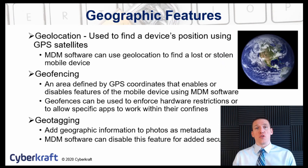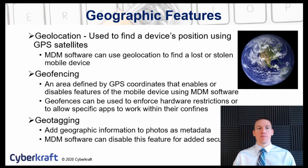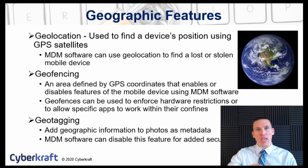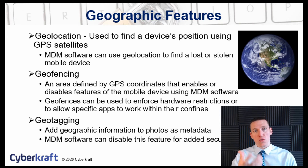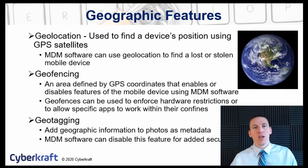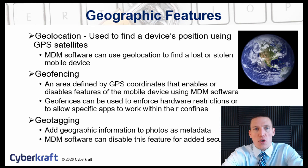Devices have certain geographical features. Most mobile devices have the ability to connect to GPS satellites, and these satellites allow for triangulation to locate the device itself. With geolocation, you can locate the device — this is useful if the device is stolen or lost. The user or security team can use the MDM software to pinpoint the location of the device, find it for the user if it's lost, or notify the authorities if it was stolen.